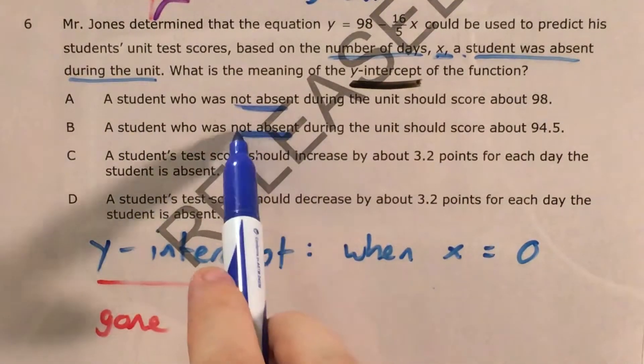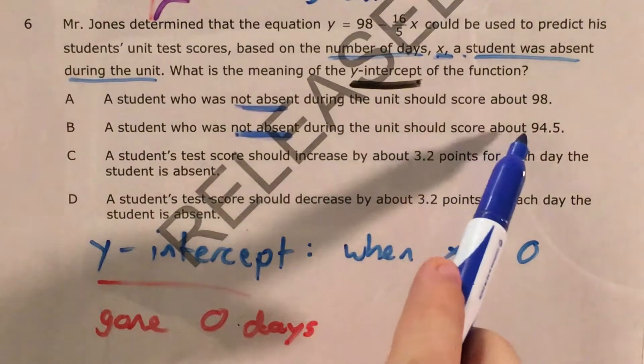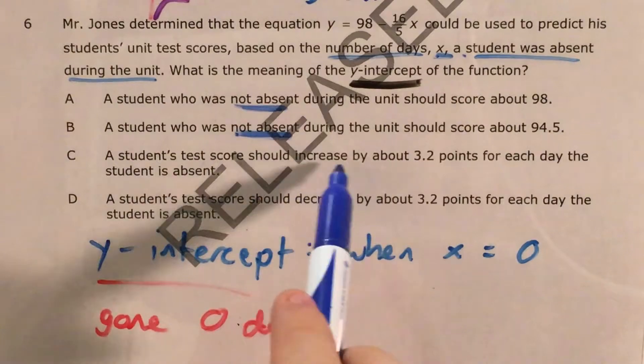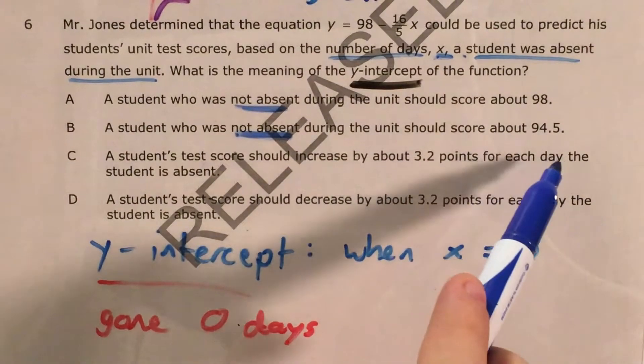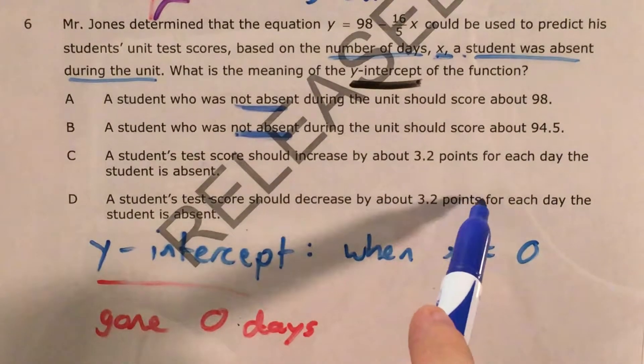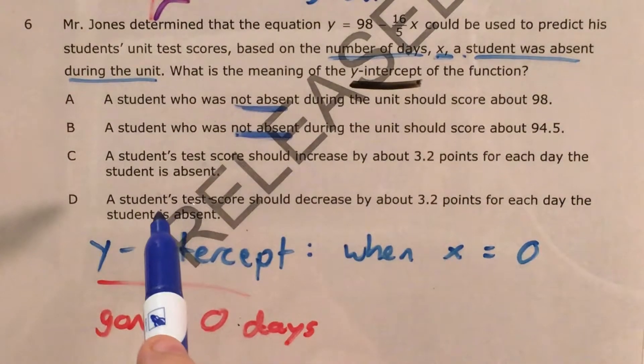Choice B, a student who was not absent, there's that again, during the unit should score about 94.5. C, a student's test score should increase by about 3.2 points for each day the student is absent. D, a student's test score should decrease by about 3.2 points for each day the student is absent.